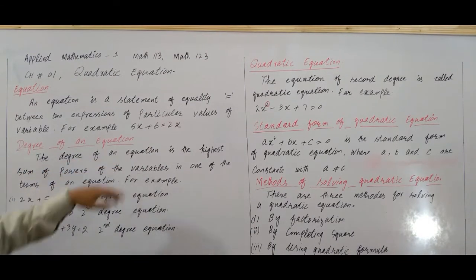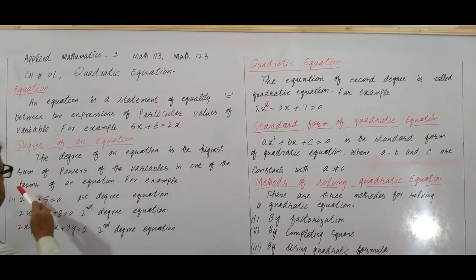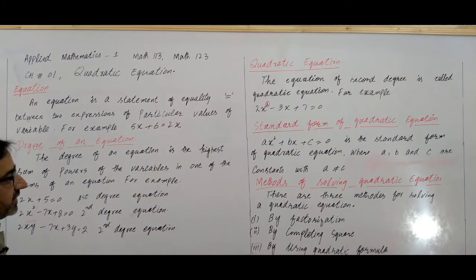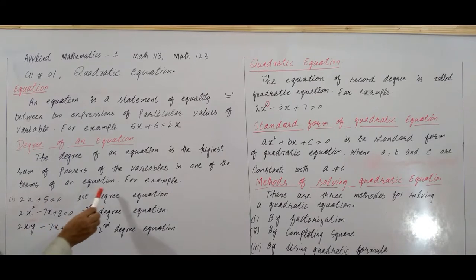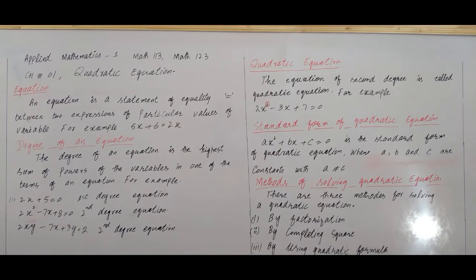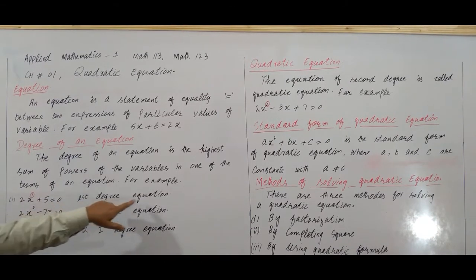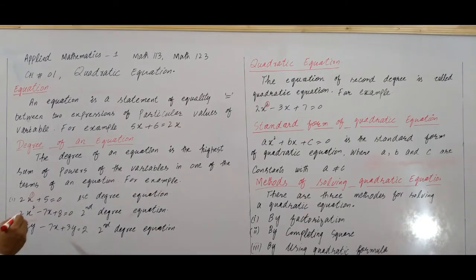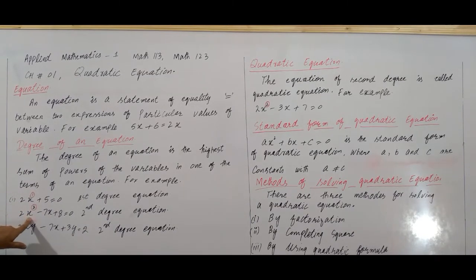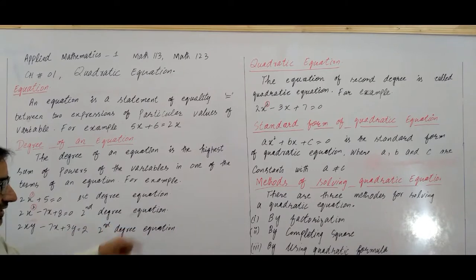The degree of an equation is the highest sum of powers of the variables in one of the terms of an equation. For example, take 2x plus y. Here we need to find the highest power. This gives us a first degree equation. Now if the power is two — that is the highest power in any one term — this gives us a second degree equation.